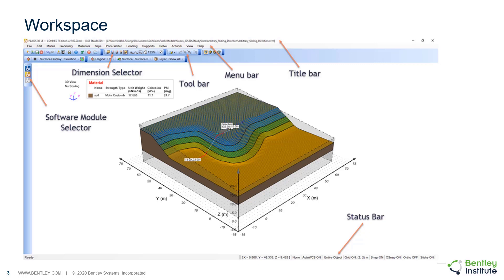The menu bar of the software has been designed to be in a logical order, from upper left to lower right. For example, if the user starts a model and proceeds through the menu system from left — file — to right — solve — they will succeed in creating and solving a model.